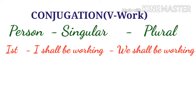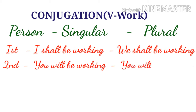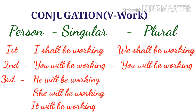Second person: 'You shall be working.' Third person singular — using 'will' as auxiliary verb: 'He will be working,' 'She will be working,' 'It will be working.' Third person plural: 'They will be working.'